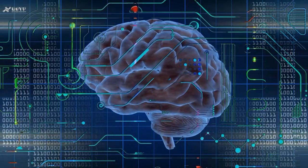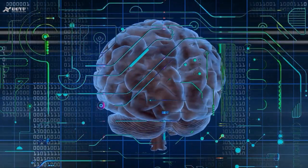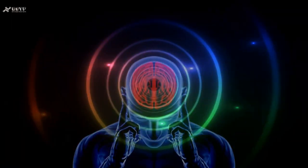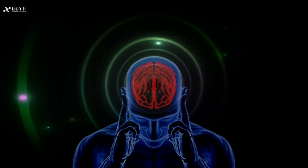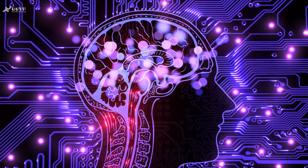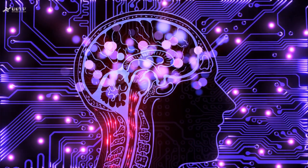So what exactly is a BCI? Imagine a direct line between your brain and a computer. BCIs use sensors to pick up on electrical signals generated by your brain activity. These signals are then translated by a computer program, allowing you to control external devices with just your thoughts.